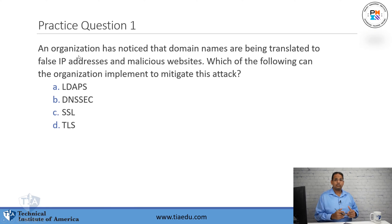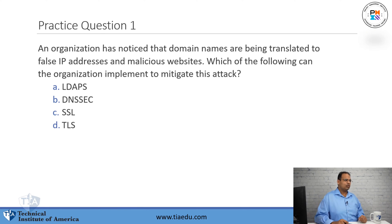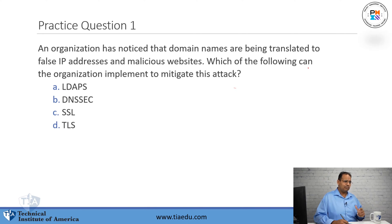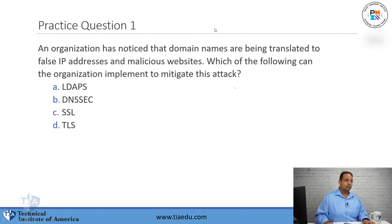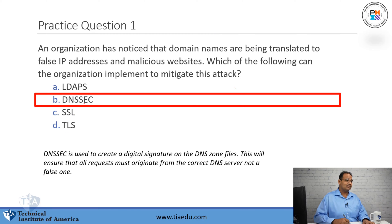Practice question one: An organization has noticed that domain names are being translated to false IP addresses and malicious websites. Which of the following could the organization implement to mitigate this attack? A. LDAP-S. B. DNSSEC. C. SSL-DTLS. The answer is DNSSEC, or DNS Security Extensions.